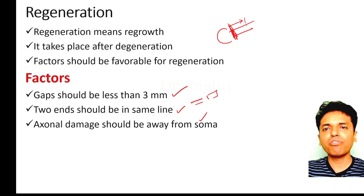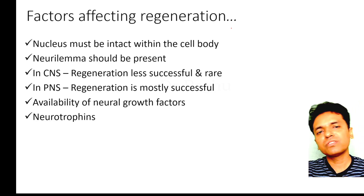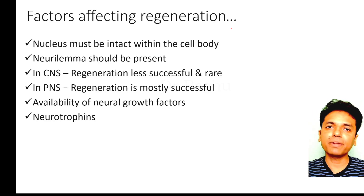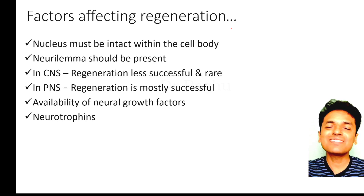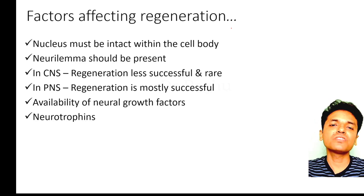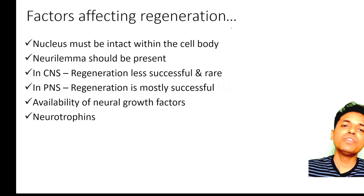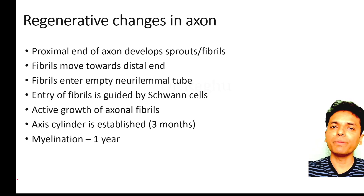As the injury is farther from the cell body, regeneration is more likely. The nucleus within the cell body should still be intact. The neurolemma should be present. In the central nervous system, regeneration is less successful and rare compared to the peripheral nervous system, where regeneration is more successful. Regeneration also depends on the availability of neural growth factors called neurotrophins.